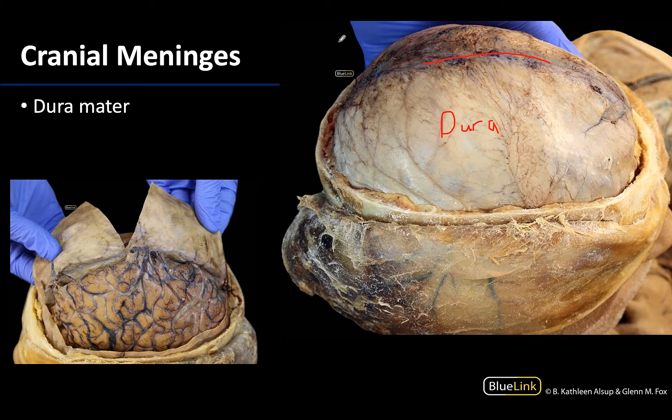You can see in this image that when the dura is reflected superiorly, you can really see how thick and opaque it is. It will be pretty distinguishable from the thinner and more translucent arachnoid and pia maters.